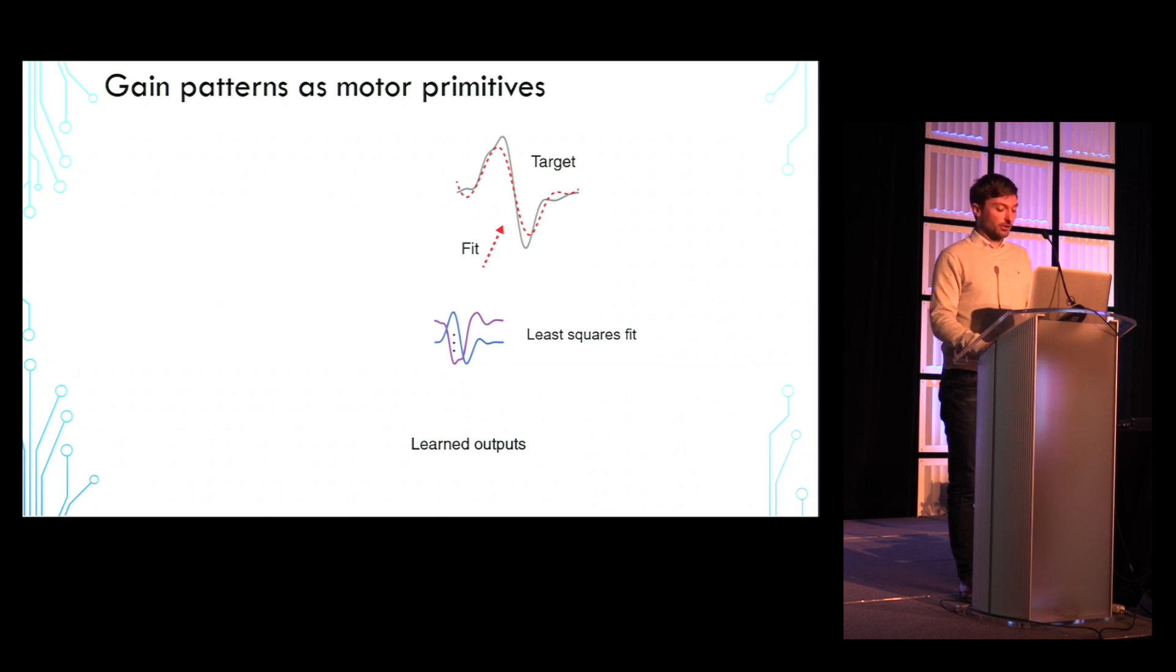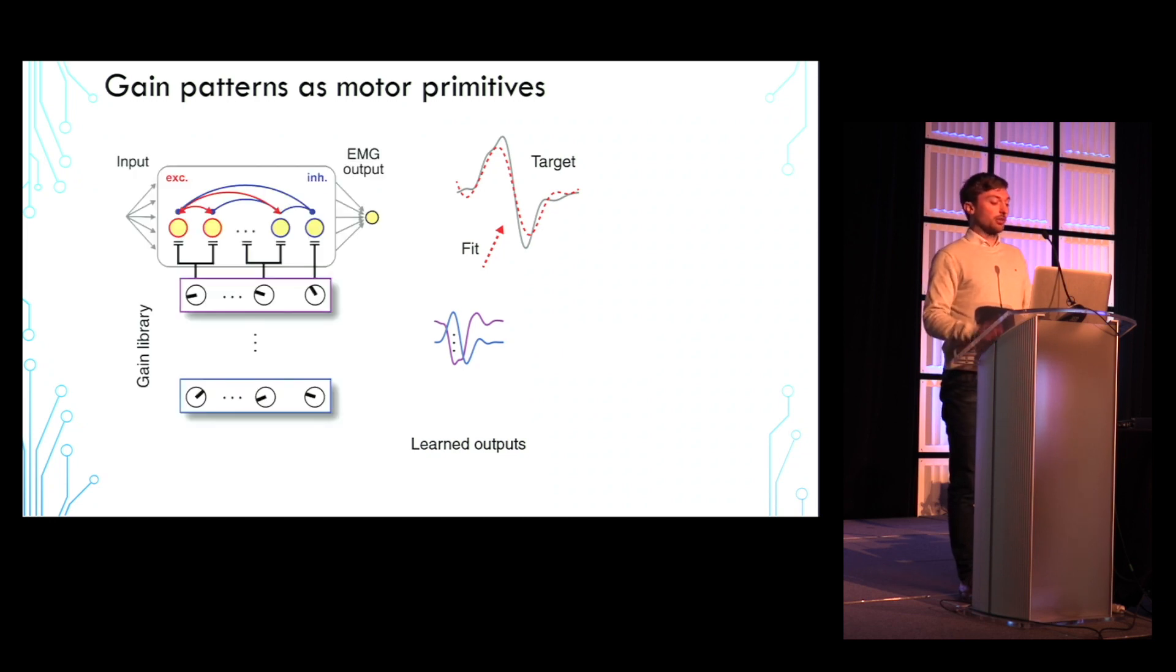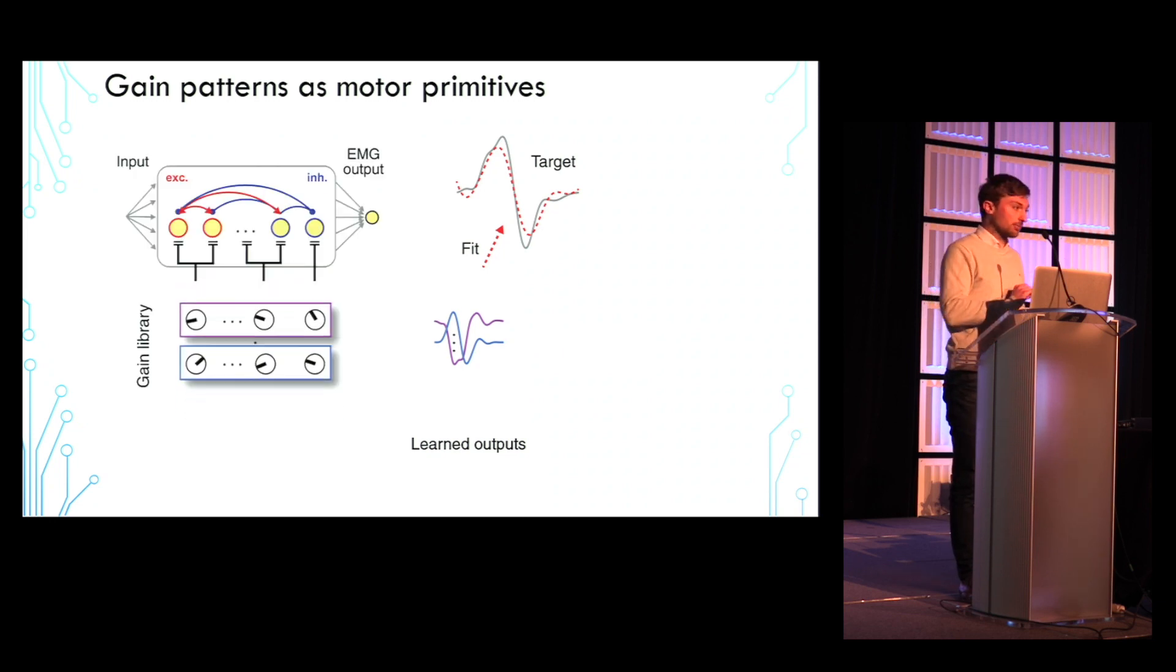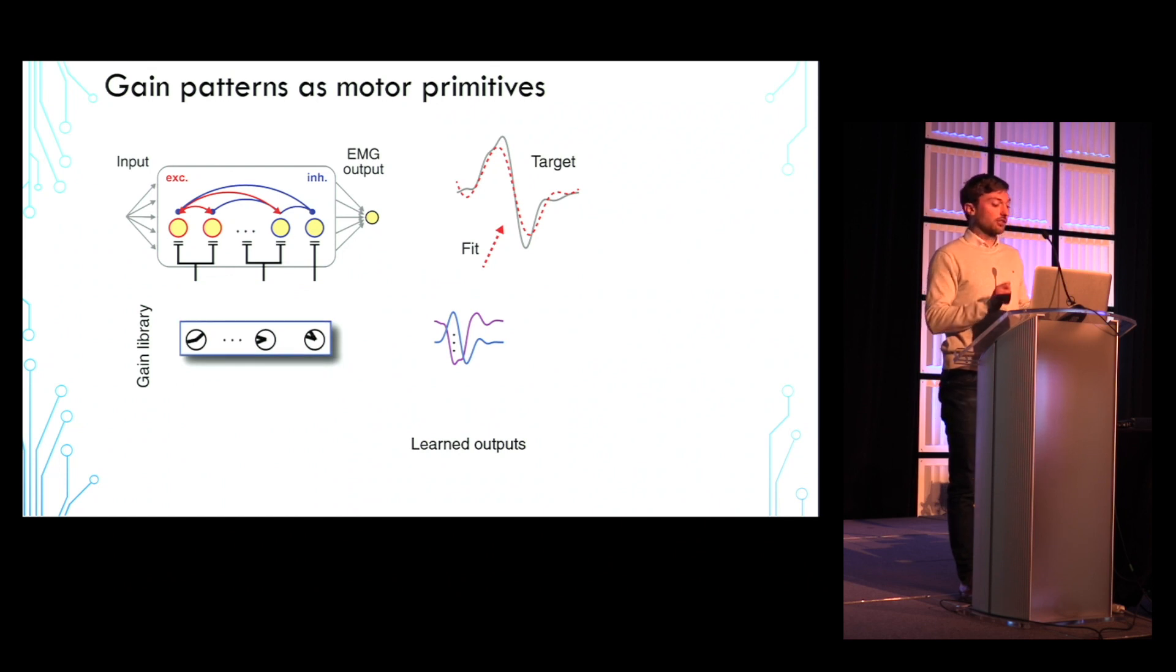Now, with the fitting coefficients we use from the least squares fit, we now generate the same combination, but this time of the associated library of gain patterns. This then creates a new gain pattern, which is shown here in orange.